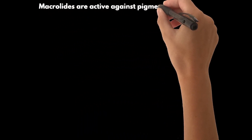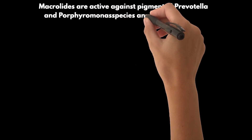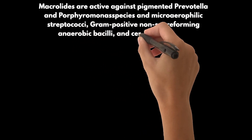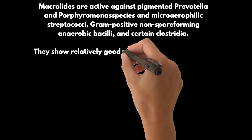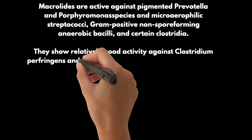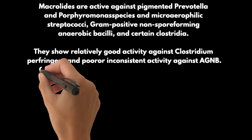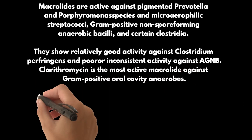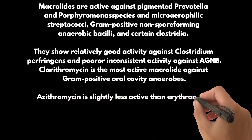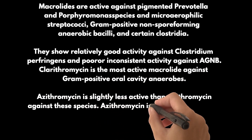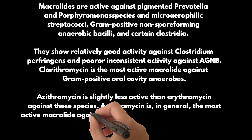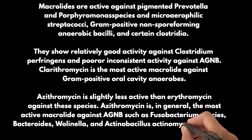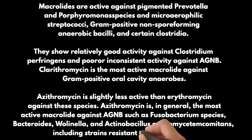Macrolides are active against pigmented Prevotella and Porphyromonas species, microaerophilic streptococci, gram-positive non-spore-forming anaerobic bacilli, and certain clostridia. They show relatively good activity against C. perfringens and poor or inconsistent activity against AGNB. Clarithromycin is the most active macrolide against gram-positive oral cavity anaerobes. Azithromycin is slightly less active than erythromycin against these species, but is in general the most active macrolide against AGNB such as Fusobacterium species, Bacteroides, Wolinella, and Actinobacillus actinomycetemcomitans, including strains resistant to erythromycin.